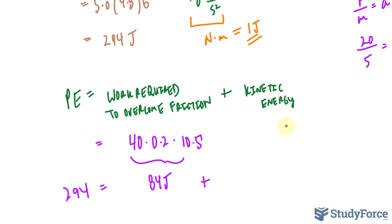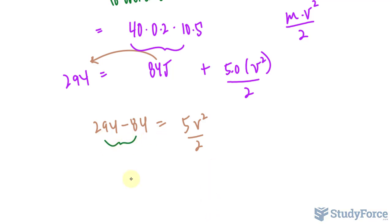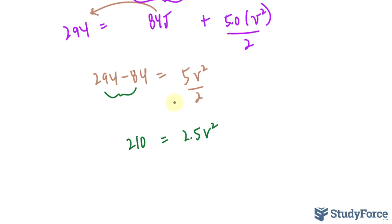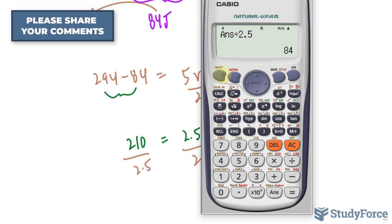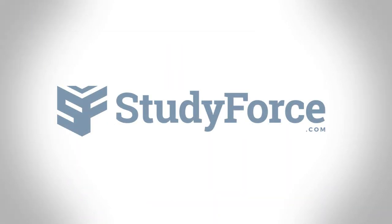Kinetic energy is calculated using ½mv². With a mass of 5.0 kg, we have 294 − 84 = 210 joules = 5v²/2, which simplifies to 2.5v². Dividing both sides by 2.5 and taking the square root gives exactly 9.2 meters per second — the same answer as before. And there you have it: two ways to find the velocity of a mass going down an incline.